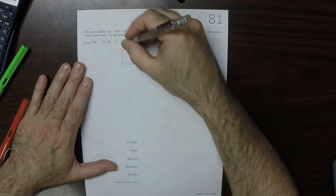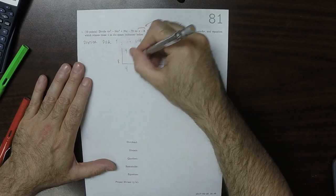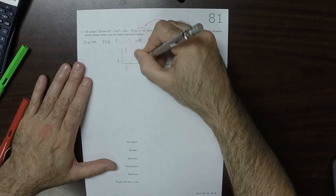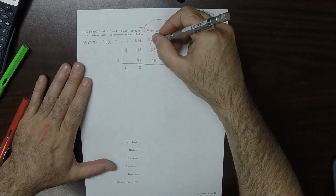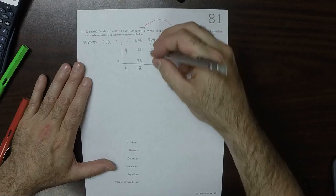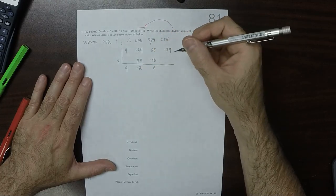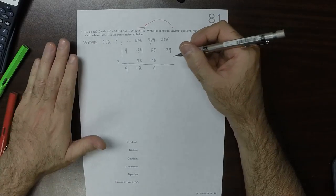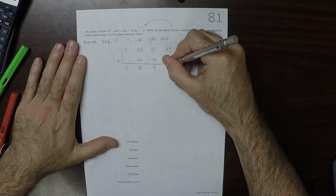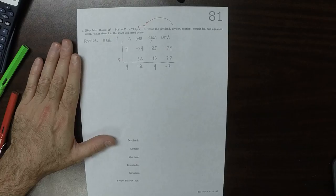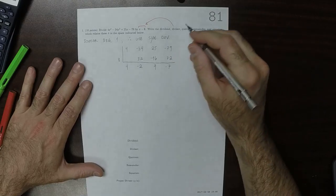So, 4, negative 34, positive 25, negative 79, and then 80 is guarding the door. So, 4, add, multiply, add, and then multiply, add.